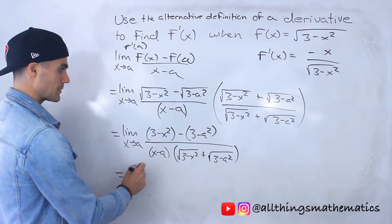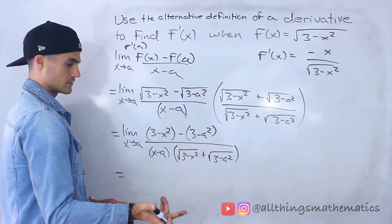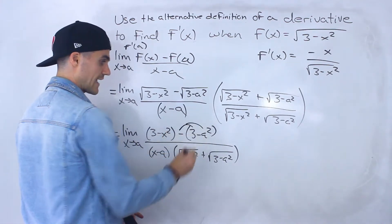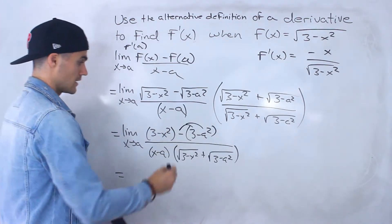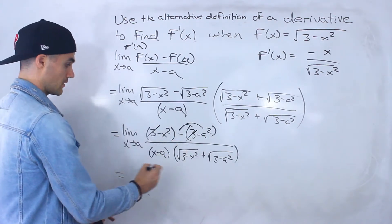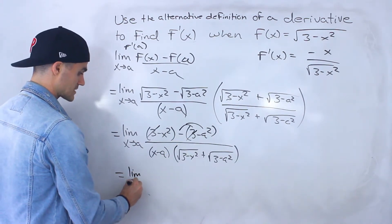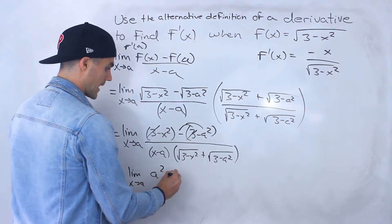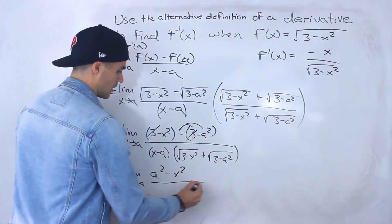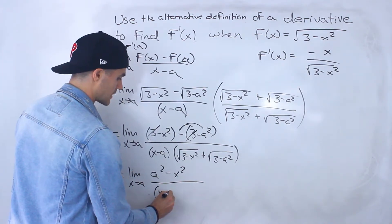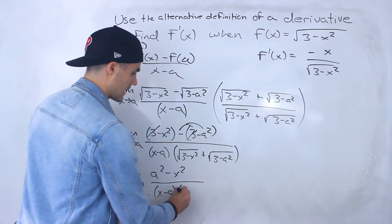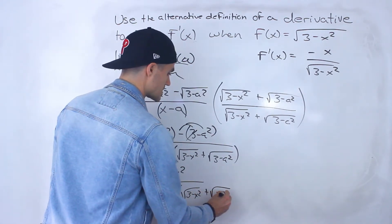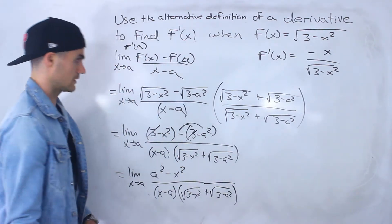Now we simplify the numerator. When we distribute the negative inside the bracket we get minus 3 plus a squared, and notice the 3's cancel out. So we end up with the limit as x approaches a of a squared minus x squared, all over x minus a times the entire expression: square root of 3 minus x squared plus square root of 3 minus a squared.